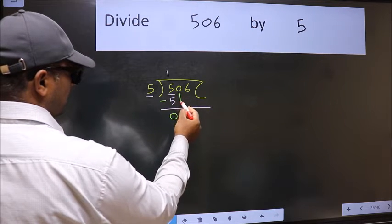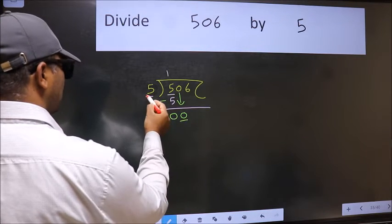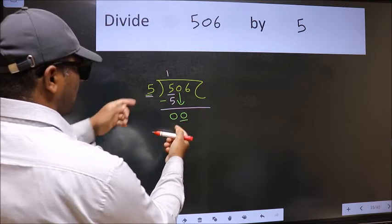After this bring down the beside number. So 0 down. Now here we have 0 and here 5. 0 is smaller than 5.